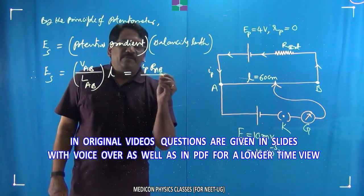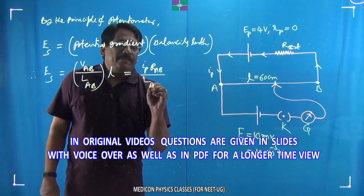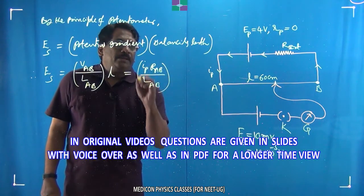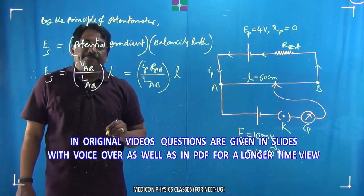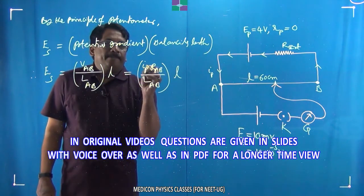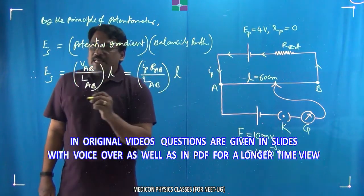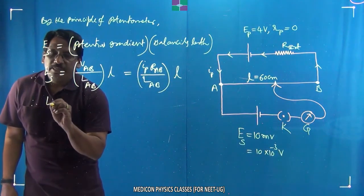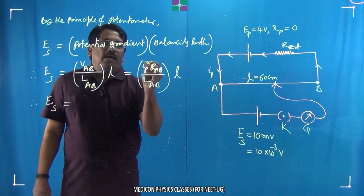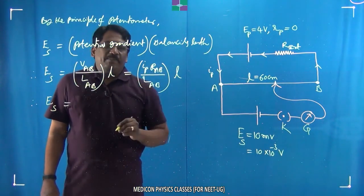along AB divided by L of AB, multiplied by the balancing length. Here, I_primary we can now write in a more elaborated way. Therefore, EMF in secondary equals—now I will write an expression for I_primary.